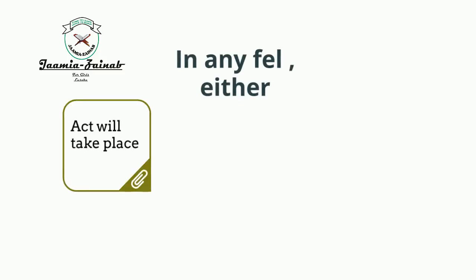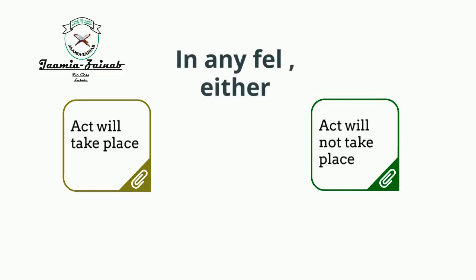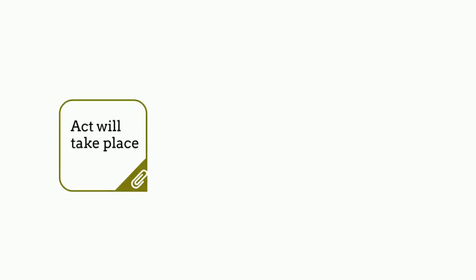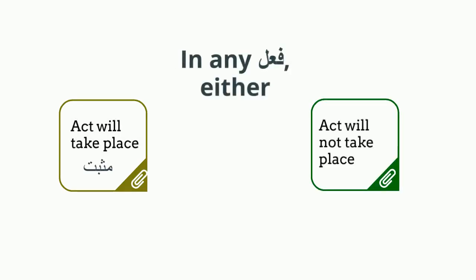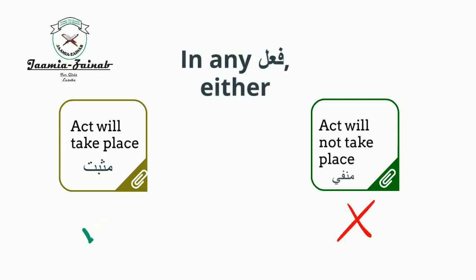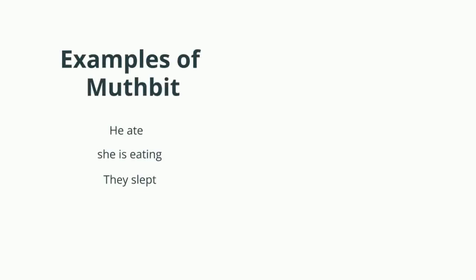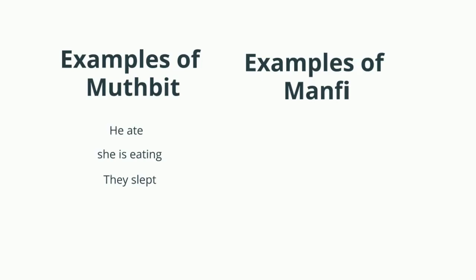In any fi'l, either the action will take place or the action will not take place. If the action takes place, that verb is known as musbit — also known as the positive form. If it does not take place, it is manfi — the negative form. Examples of musbit: he ate, he is eating, they slept. Examples of manfi: he didn't eat, she is not eating, they didn't sleep.